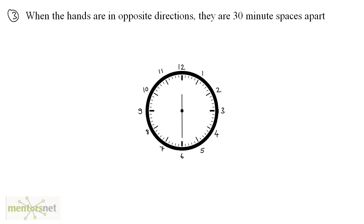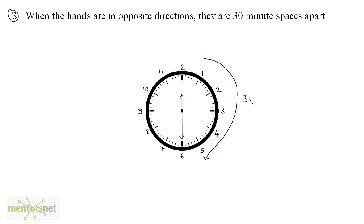The third point: when the hands are in opposite directions, they are 30 minute spaces apart. When these two hands are in opposite directions, if you count the minute spaces between them, they will come out as 30.